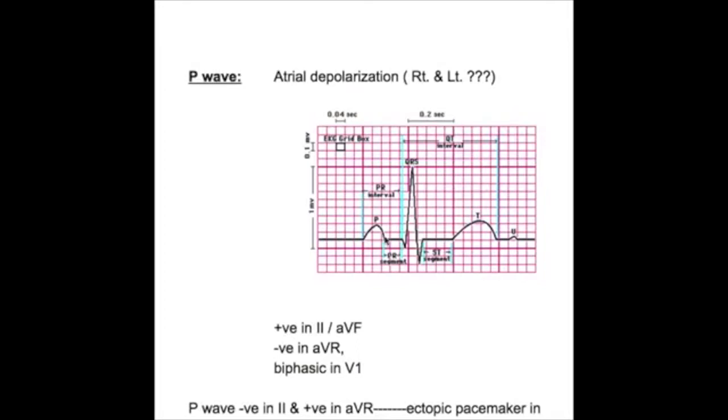The P wave is atrial depolarization. The P wave is dome-shaped with an upstroke and a downstroke. P wave duration is 0.1 to 0.12 seconds and the amplitude is 2 millimeters.